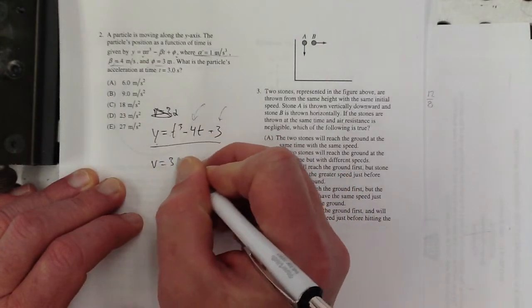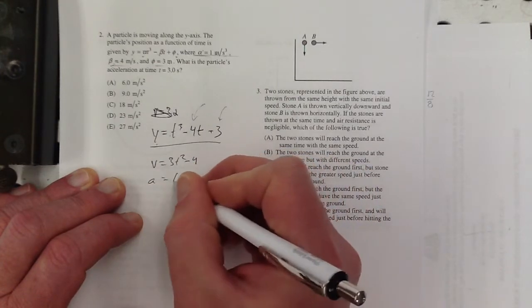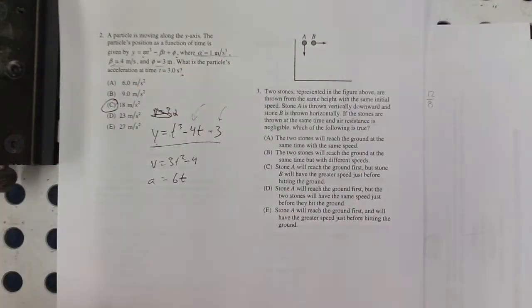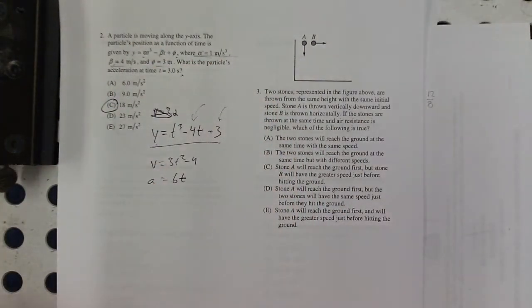All right, so velocity, 3t squared minus 4. Acceleration, 6t. Plug in the time, and there is your acceleration. I mean, that should be like a 30-second question.